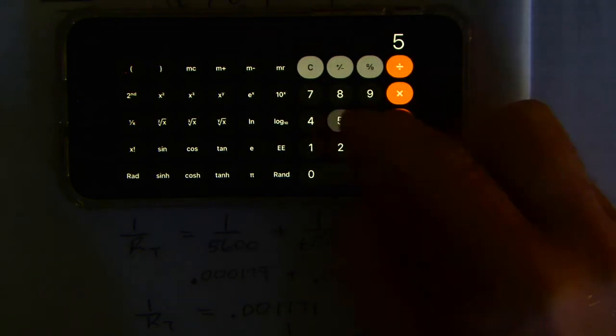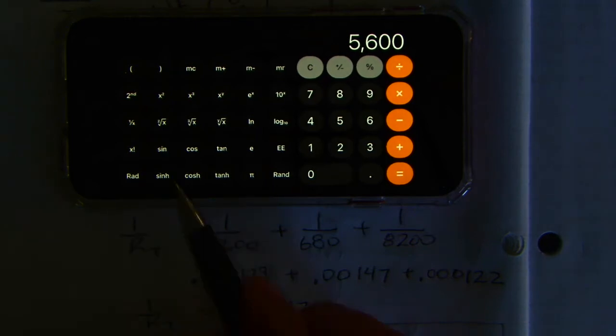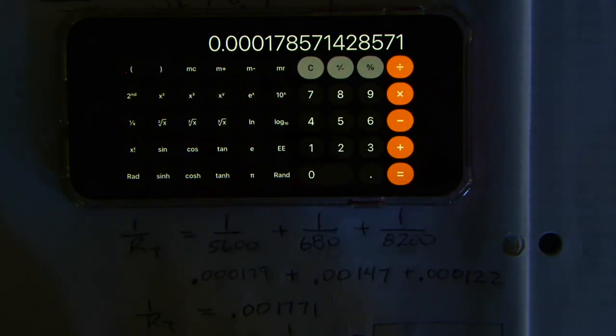this 5600, and then there's a key called the 1 over x key. The 1 over x key is right there. That gives you the inverse of that value.